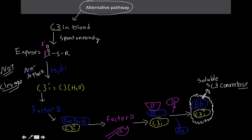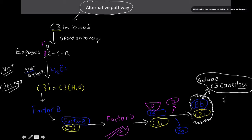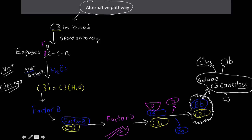Since the name ends in '-ase,' you know it's an enzyme. The soluble C3 convertase acts on C3i, cleaving it into C3i alpha and C3i beta. C3i alpha is an inflammatory agent — smaller subunits generally serve as anaphylatoxins for inflammation. C3i beta is an opsonizing agent and will also form another convertase.